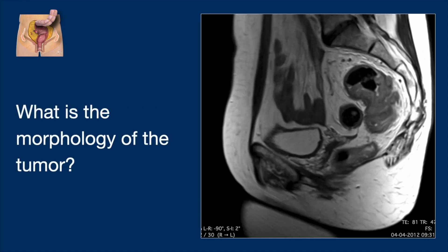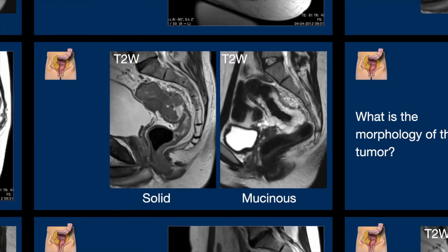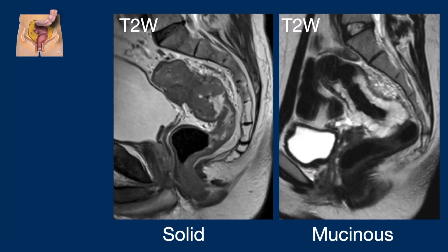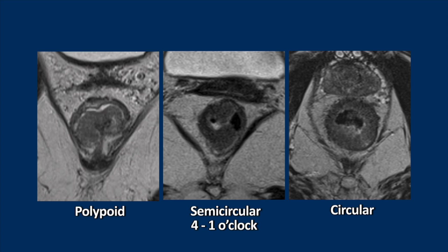What is the morphology of this tumor? Looking at two other cases: on the left we have an iso-intense tumor on T2-weighted images, which is solid. On the right we have a high signal tumor, which is mucinous. Then we have to look at the shape of the tumor. The tumor can be polypoid, like the case on the left where we see the lumen and the stalk. Or a tumor can be semicircular or circular, like the two other cases.